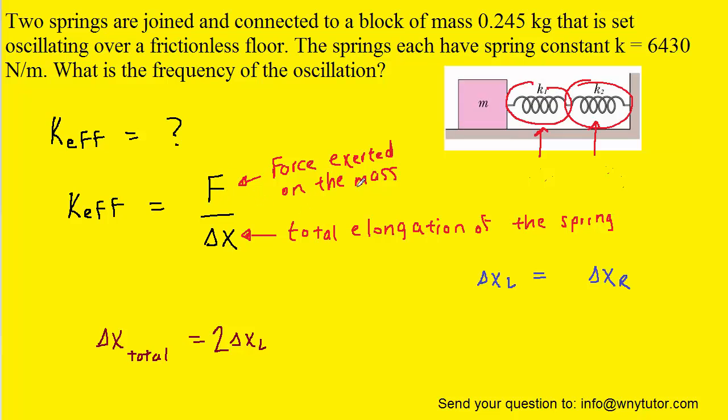We now have an expression for the total elongation of the spring. The force F exerted on the mass - going back to the diagram if we look carefully - would be the force of the left-hand spring. The force of the left-hand spring equals the spring constant multiplied by delta x_L. With these expressions, we can plug in to find the effective spring constant.